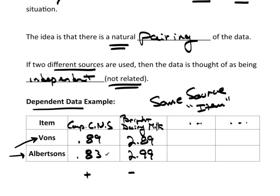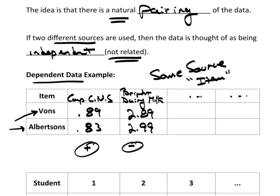It depends on which way I subtract them. In general, which one is more expensive? So if I take Vons subtracts Albertsons, I'll get a positive value, telling me that first one, Vons, is more expensive. And here, Vons minus Albertsons would give me a negative value, telling me that Albertsons is more expensive. So this is definitely a dependent data situation because we're taking measurements from the same source, just two different locations.